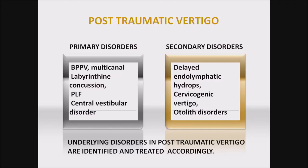Post-traumatic vertigo in children — two types: primary and secondary disorders. Primary disorders include BPPV (usually multi-canal in post-traumatic cases), labyrinthine concussion, perilymphatic fistula, and central vestibular disorders. Secondary disorders include delayed endolymphatic hydrops, cervicogenic vertigo, and otolithic disorders. Underlying disorders in post-traumatic vertigo are identified and treated accordingly.